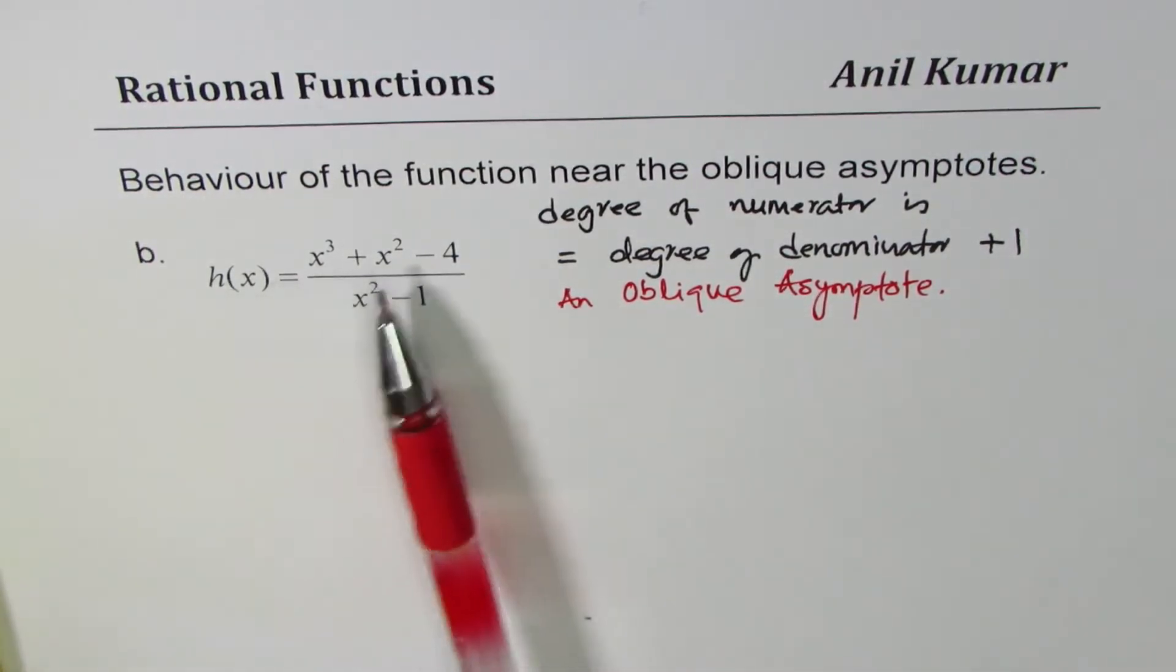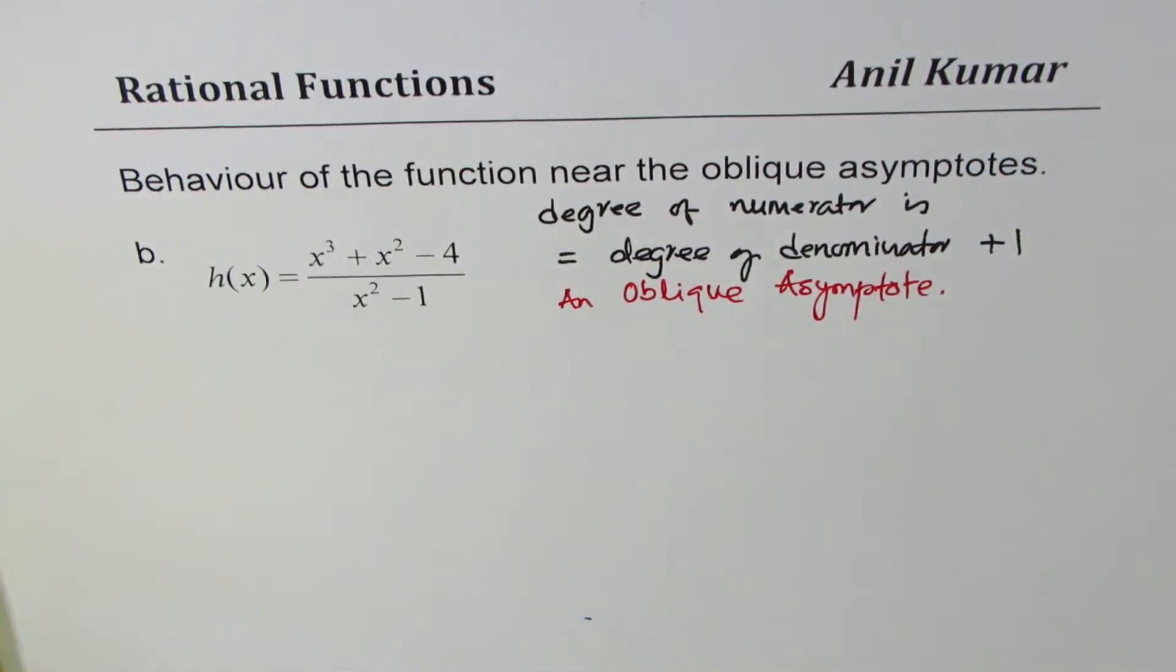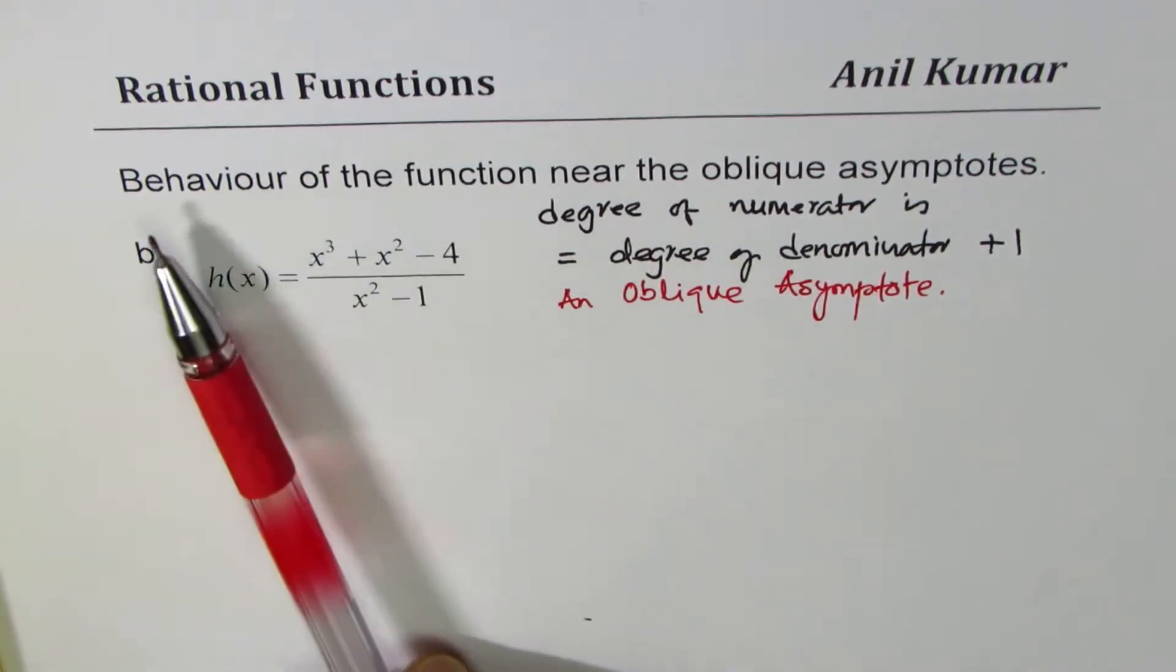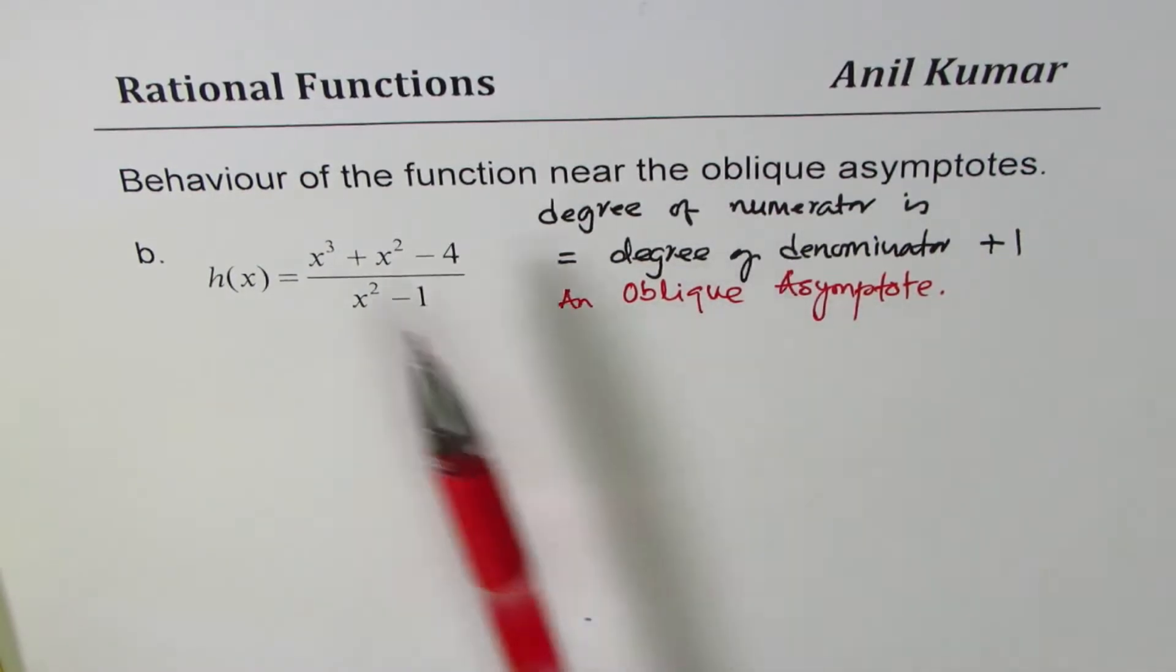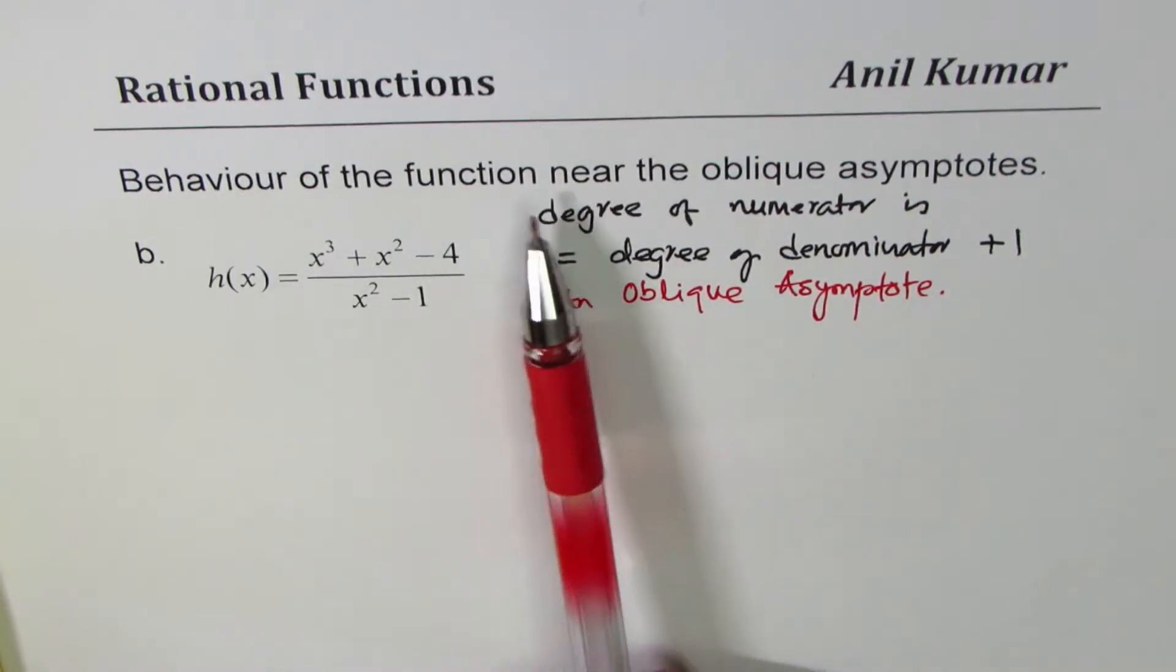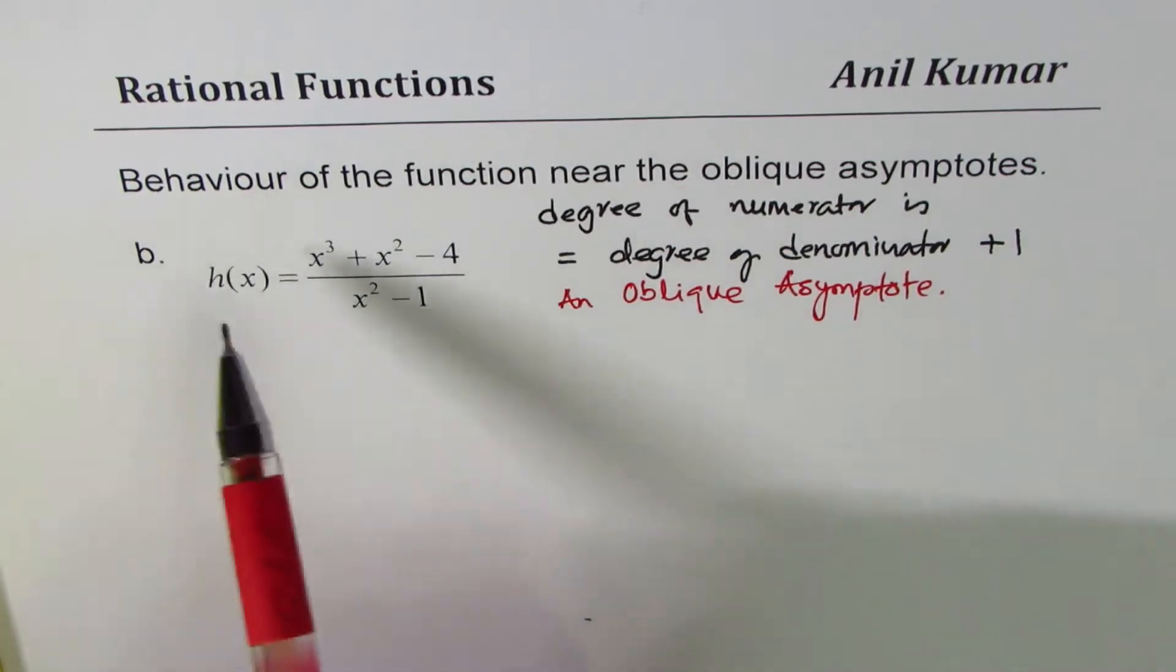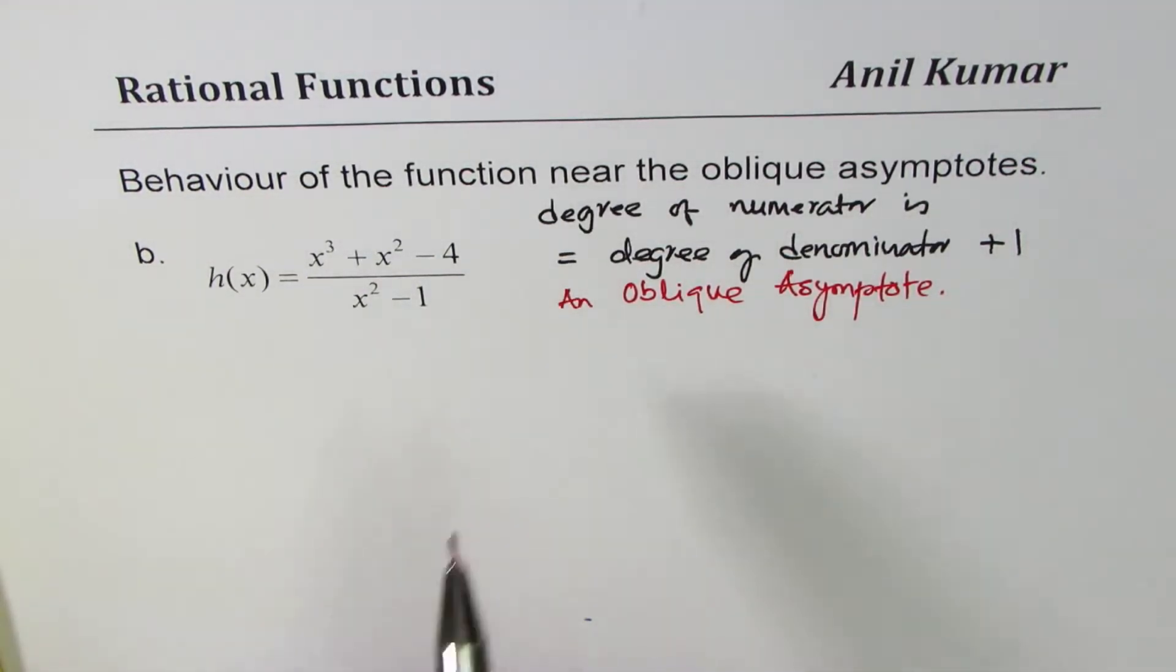First we will find what is this oblique asymptote and then we will actually find the end behavior of the function. Let's begin by calculating what is the oblique asymptote.